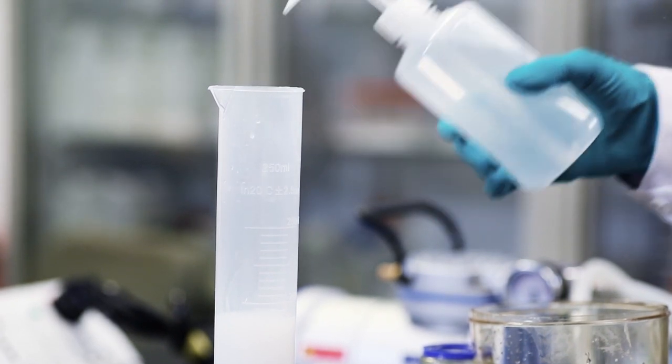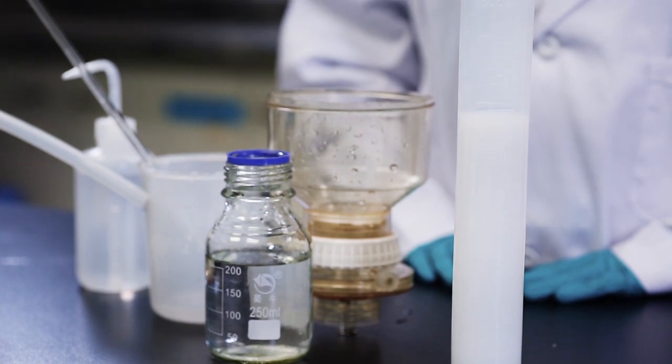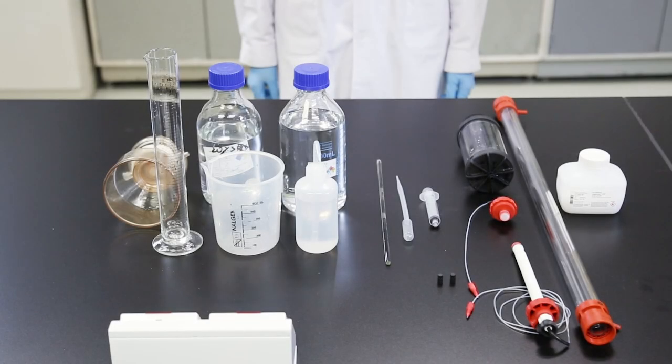After the last wash step, add packing solution to obtain the slurry concentration for the specific resin and column type. Now that you have prepared the resin, the next step is to prepare the column.